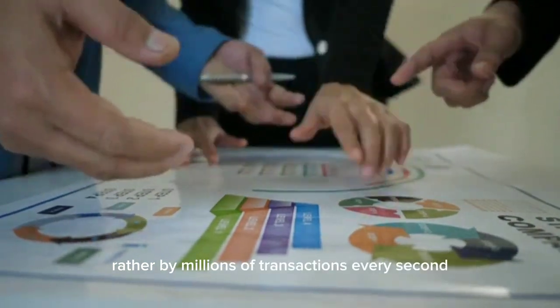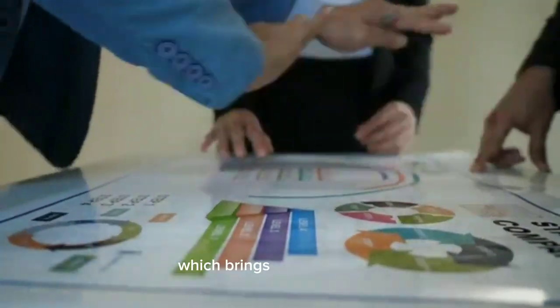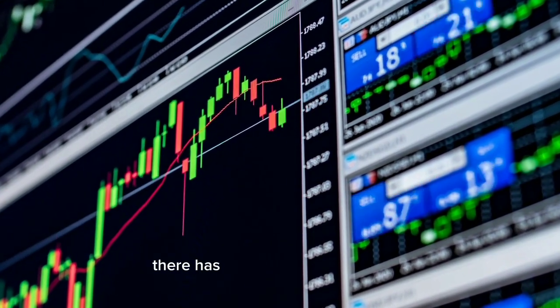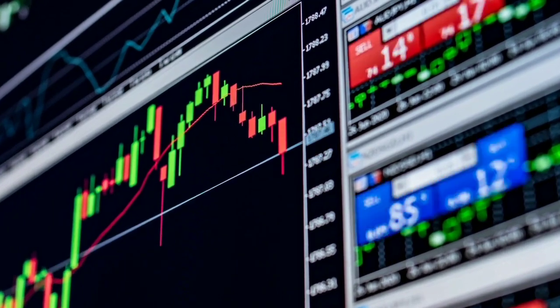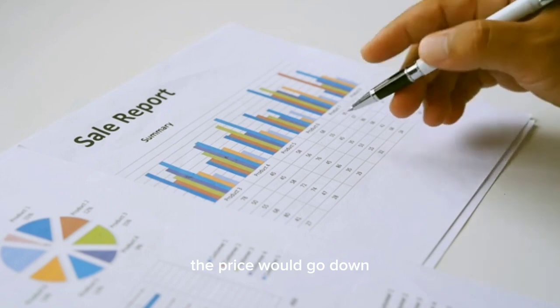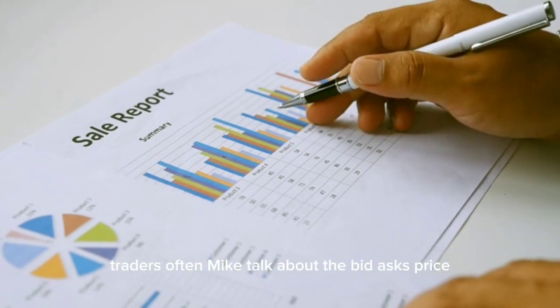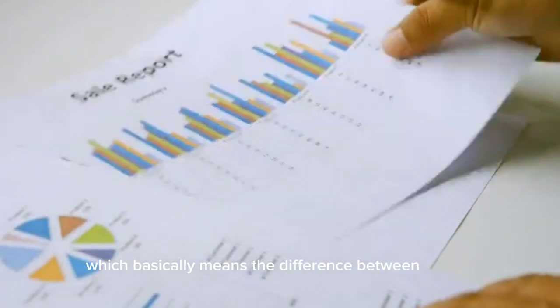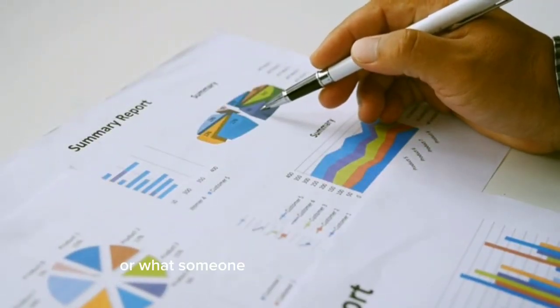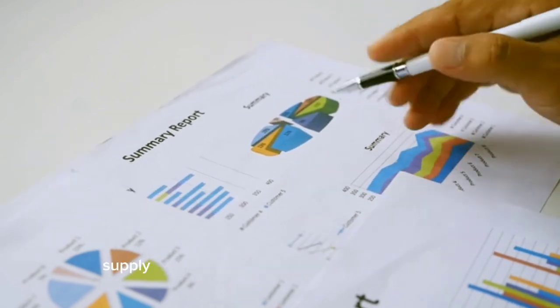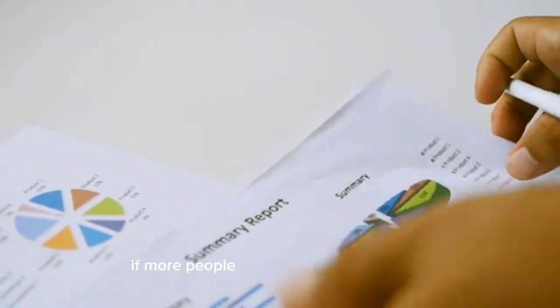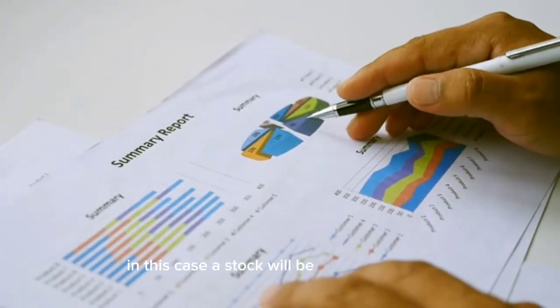Supply and demand. For every stock purchase or sale, there has to be a buyer and a seller. If there are more buyers, then the price will go up. If there are more sellers, the price will go down. Traders often might talk about the bid-ask spread, which basically means the difference between the bid, or what someone is willing to pay to buy a share, and the ask, or what someone is willing to sell a share for. Supply and demand is fairly simple to understand. At the end of the day, if more people want something, that thing—in this case, a stock—will be more expensive.